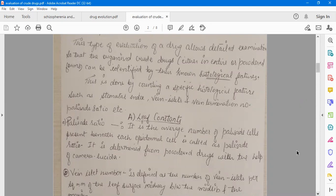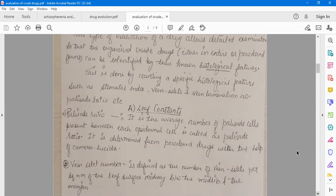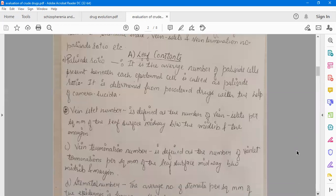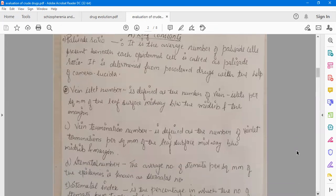This is done by counting specific histological features such as stomatal index, vein isolate and vein termination number, palisade ratio, etc. Number one is the leaf constant. In the leaf constant we will consider some factors. The palisade ratio is the average number of palisade cells present beneath each epidermal cell. It is determined from powder drugs with the help of camera lucida.